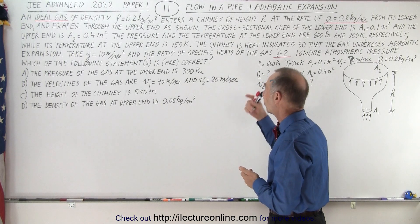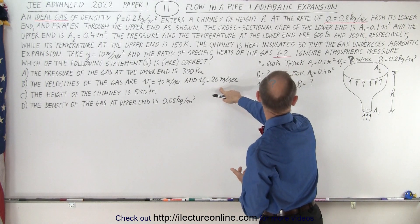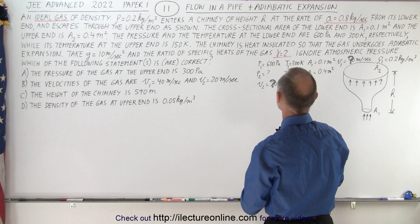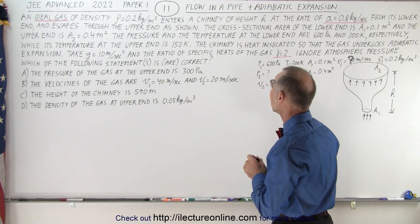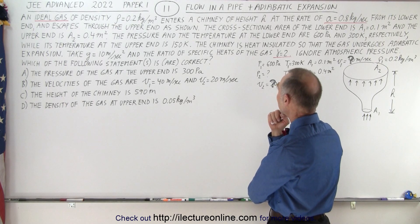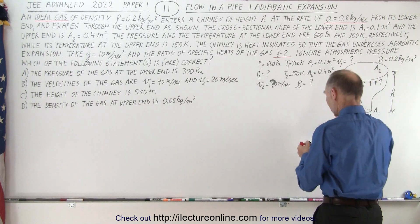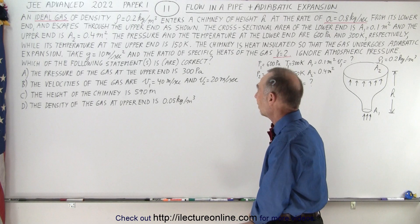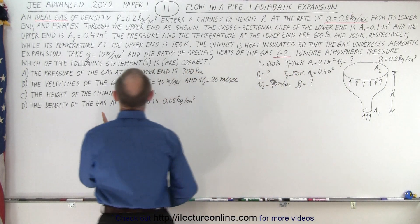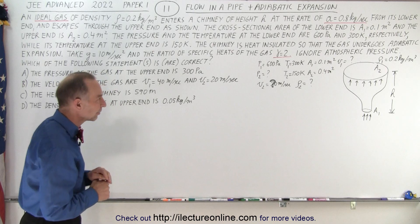The four statements to verify are: A) the pressure at the upper end is 300 pascals; B) the velocities are V1 = 40 m/s and V2 = 20 m/s; C) the height of the chimney is 590 meters; and D) the density at the upper end is 0.05 kg/m³. Neither velocity is given — V1 and V2 are both unknowns that we have to find.